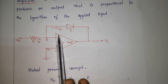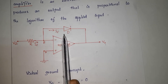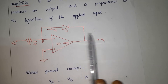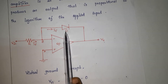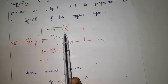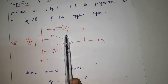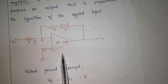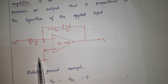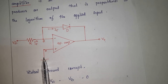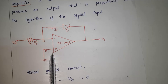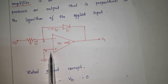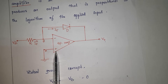In this log amplifier circuit, we are using a diode. This diode is used in the negative feedback path. The non-inverting input terminal of the op-amp is connected to ground, meaning 0 volts is applied at the non-inverting input terminal of the op-amp.